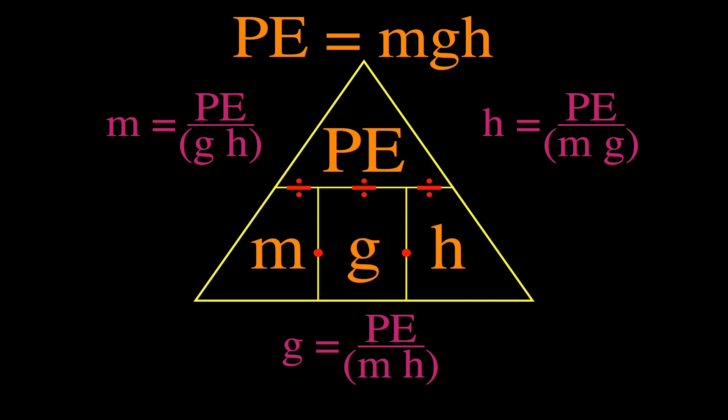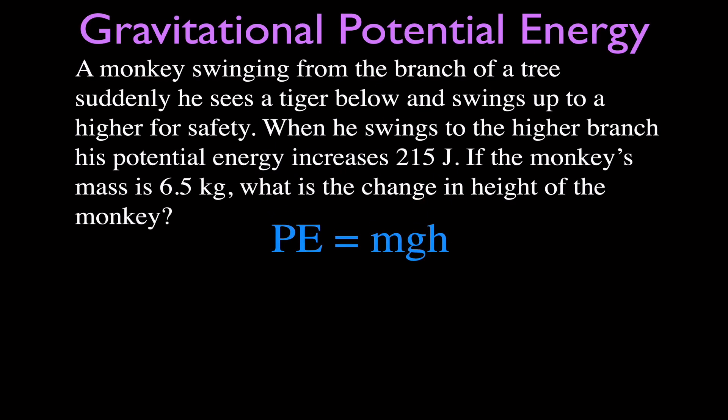Now we're going to do a couple simple examples for gravitational potential energy. A monkey is swinging from a branch of a tree. Suddenly, the monkey sees a tiger below and swings up to a higher branch for safety. When he swings to the higher branch, his potential energy increases by 215 joules. If the monkey's mass is 6.5 kilograms, what is the change in height? You can see we have four things: PE, m, g, h. g is a constant, we're given PE, that's 215 joules. We're given the mass of 6.5 kg, we know g, and we're going to solve for h.